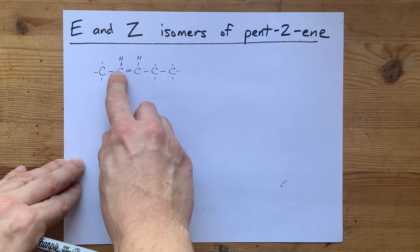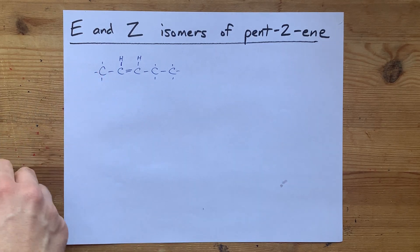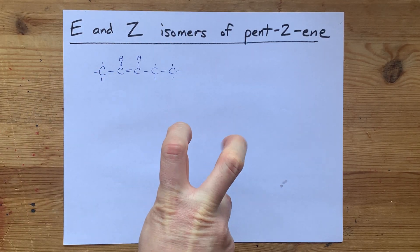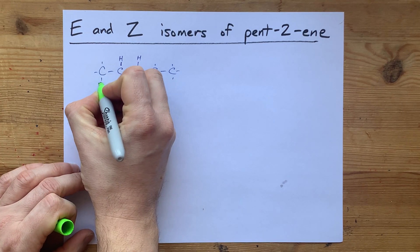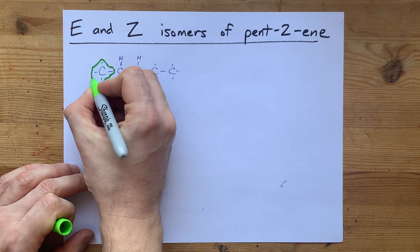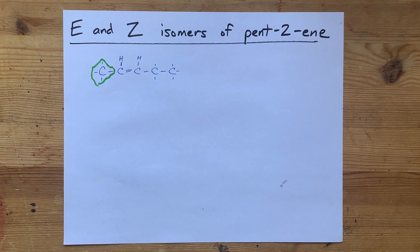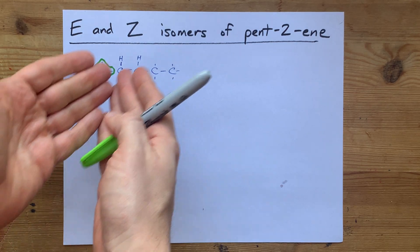C versus H. This C is higher priority because it has the higher atomic mass. So that means the CH3 group has the higher priority compared to the H.